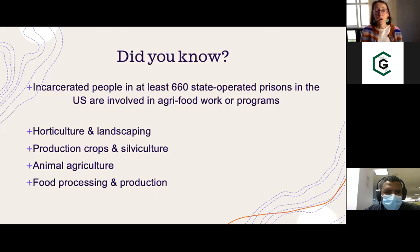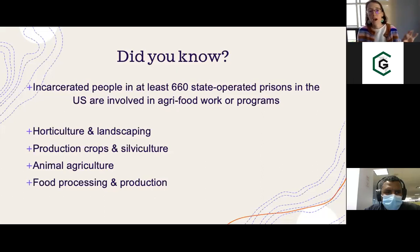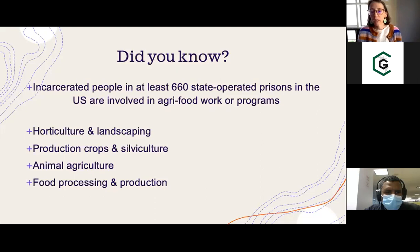The four categories are: horticulture and landscaping; crops and silviculture — so those are production crops like corn, soybeans, or cotton; animal agriculture; and food processing and production. An important part of our data collection effort has been linking our data set to a federal geospatial mapping of the prison property boundaries. You can actually go into the GIS map and see the actual borders of the prison boundaries, and sometimes even see gardens or plots where corn is being grown. Those two data sets together have been an important building block upon which we started our collaboration with the Geospatial Centroid.